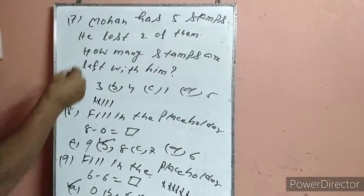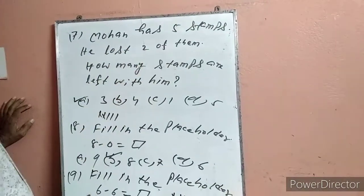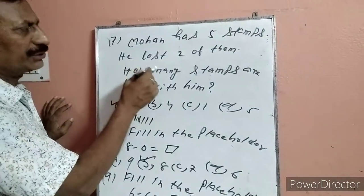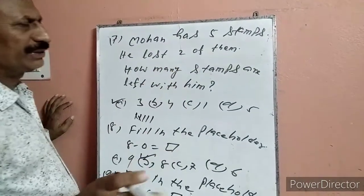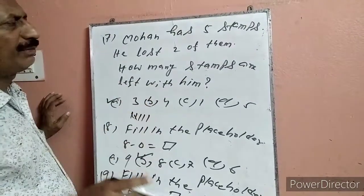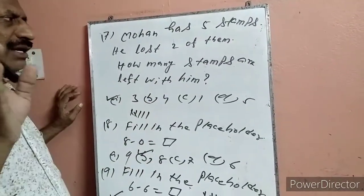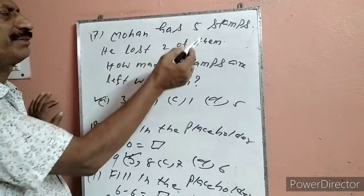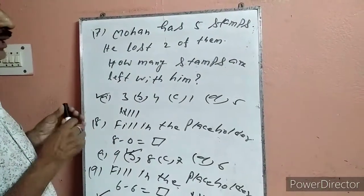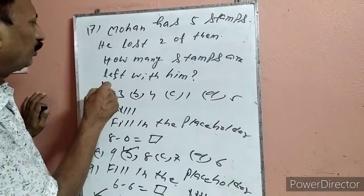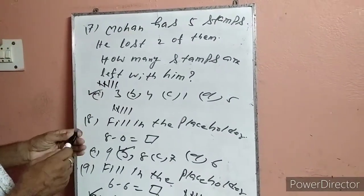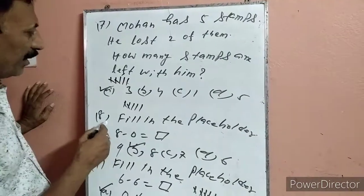Question 7: Mohan के पास 5 stamps हैं. He lost 2 of them. How many stamps are left? जहां भी 'left' होगा, वहां subtract करना. 5 minus 2: हम 5 line drop करेंगे, 2 को cross करेंगे. बच गया: 1, 2, 3. Answer 3. A पर टिक लगा देना.